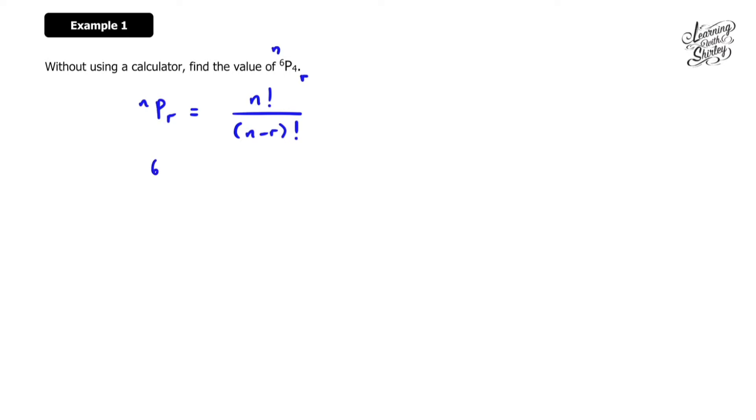To find 6P4, it equals 6 factorial over (6 minus 4) factorial, which is 6 factorial over 2 factorial. This equals 6 times 5 times 3 times 2 factorial. Why do I stop at 2 factorial? Because I want to cancel with the 2 factorial at the bottom. I can cancel off the 2 factorial top and bottom, so it equals 6 times 5 times 3, which equals 360. That's the answer.